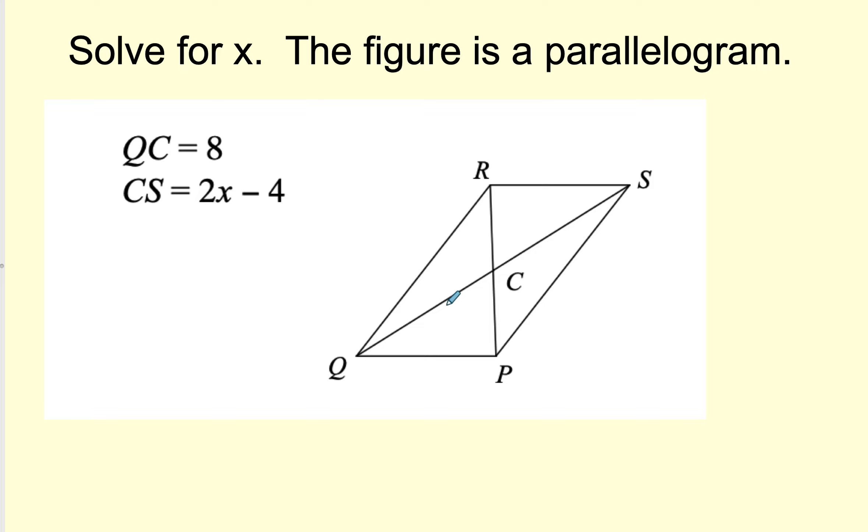All right. Let's take a look at QC. QC is 8. So I know that this other side is 8. CS, they tell us CS is 2X minus 4. And we know that 2X minus 4 has to also be 8. So 2X minus 4 is equal to 8. 2X is equal to 12. So X is equal to 6.